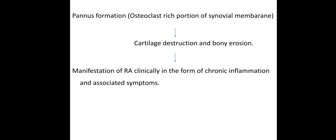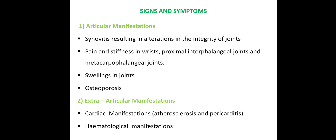Pathogenesis leads to clinical manifestations. Articular manifestations include chronic inflammation of the joints with pain and stiffness — the joints become very stiff and there is limited flexibility. Swelling in joints is also present, and this can lead to osteoporosis.